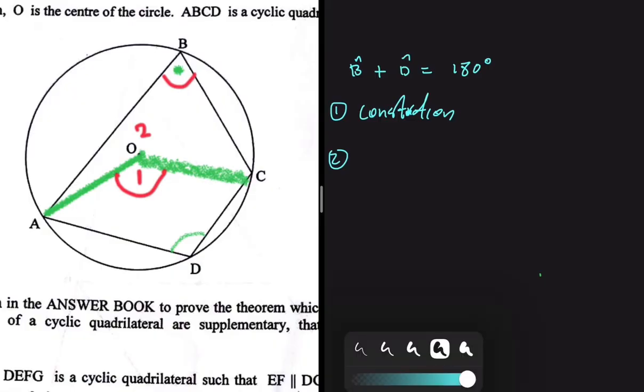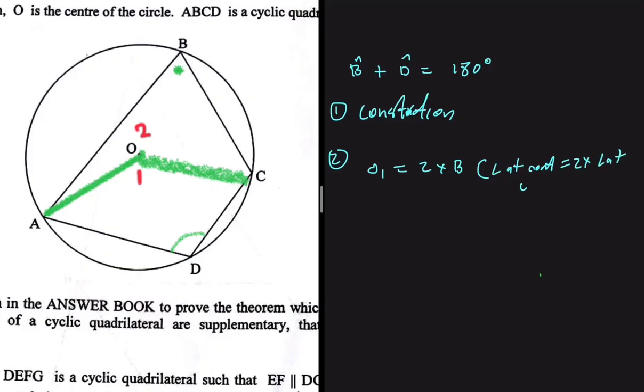So what am I saying? I'm saying that O1 should equal two times angle B. The angle at center equals two times the angle at the circumference. We know that for sure. And then we can also say that O2 is twice angle D.